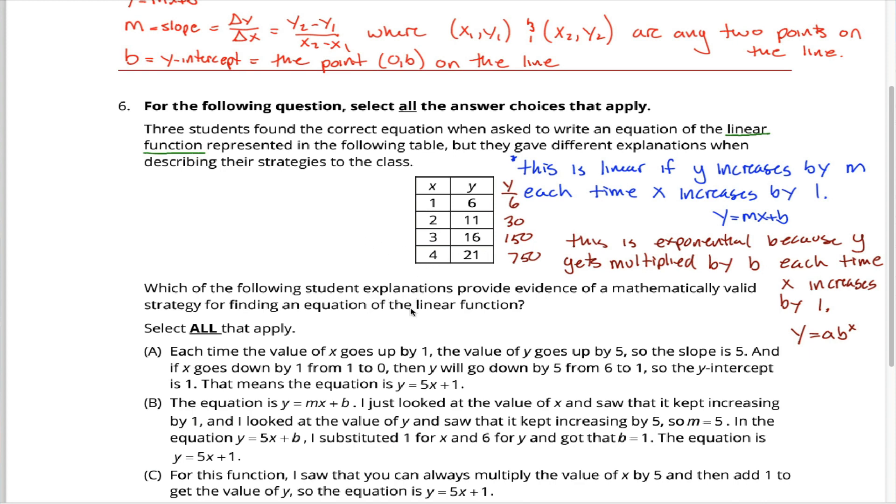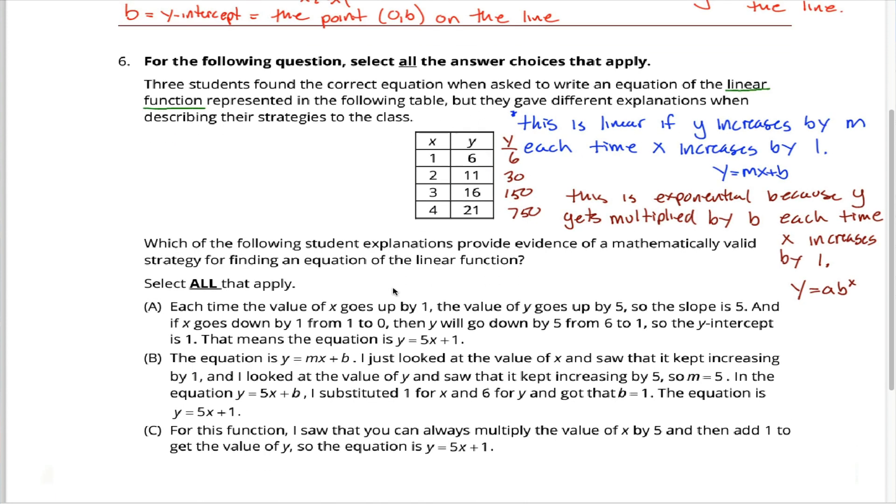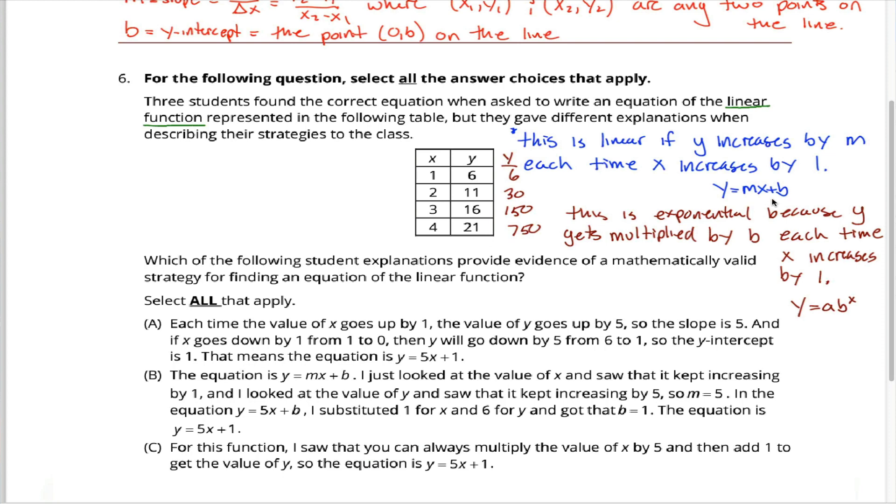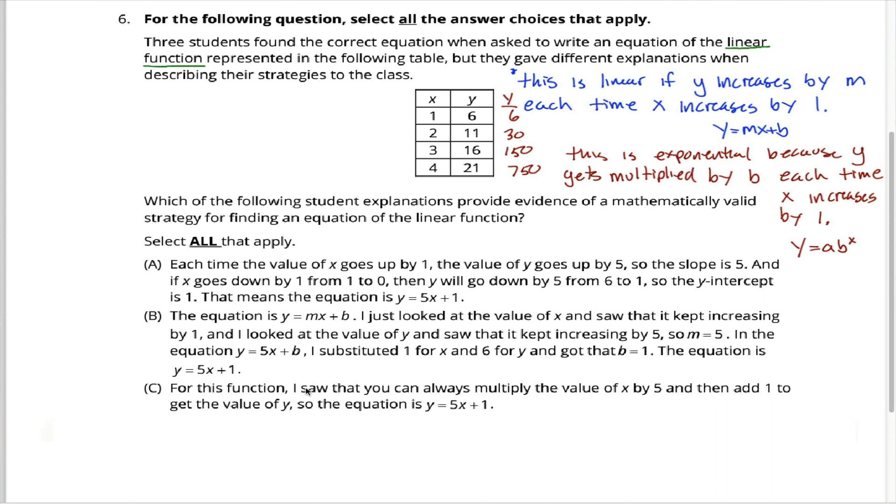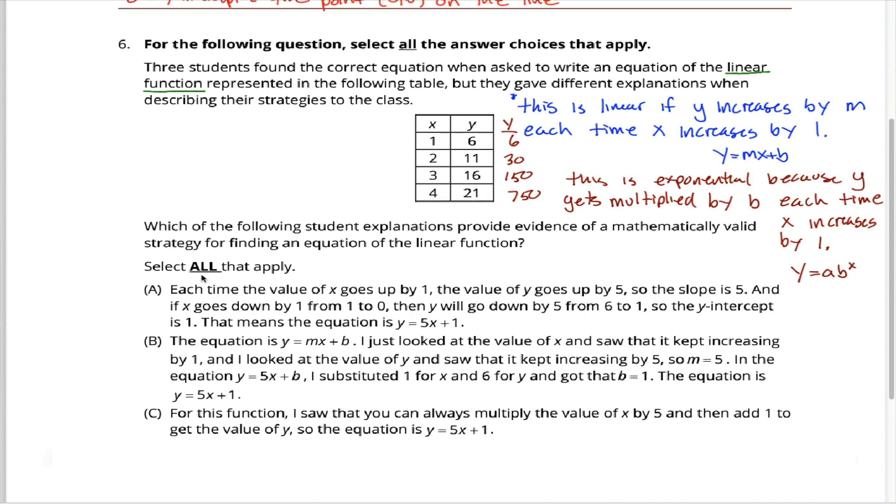Back to this specific problem. The student is tasked with coming up with the equation of the linear function that this table here represents. To figure out the equation of the linear function, you need to know the two parameters, the m and the b, the slope and the y-intercept. Three different ways that students could figure those things out. What we're supposed to do is determine whether any or all or some of those three methods are legitimate, are mathematically valid strategies. So let's go through them one by one.